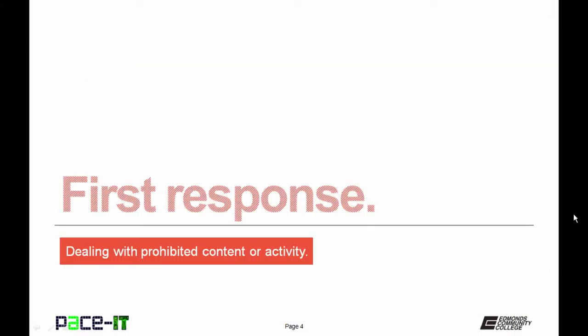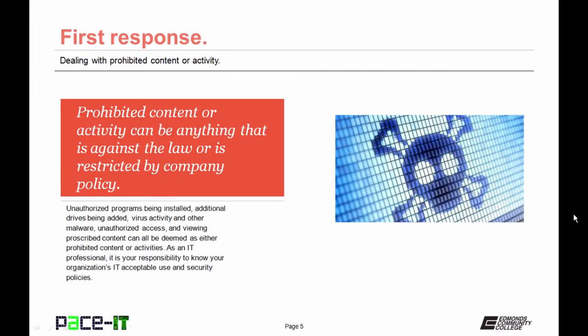First up is the first response to dealing with prohibited content or activity. Prohibited content or activity can be anything that is against the law or restricted by company policy, such as unauthorized programs being installed, additional hard drives being added, virus activity and other malware, unauthorized access, and viewing prescribed content.